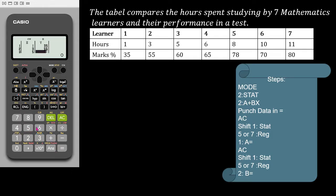Then we will go to the next column for the y values. We start with 35 equals, 55 equals, 60 equals, 65 equals, 78 equals, 70 equals, 80 equals.